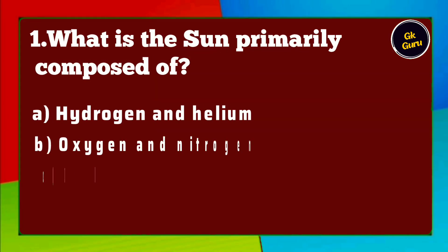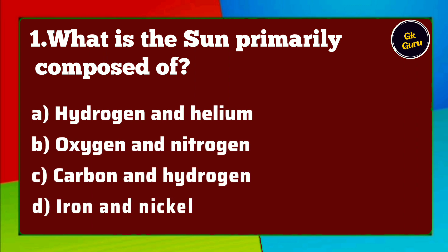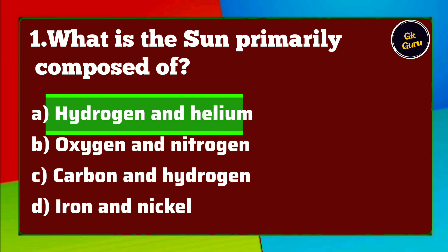What is the sun primarily composed of? A. Hydrogen and Helium B. Oxygen and Nitrogen C. Carbon and Hydrogen D. Iron and Nickel. Answer A. Hydrogen and Helium.